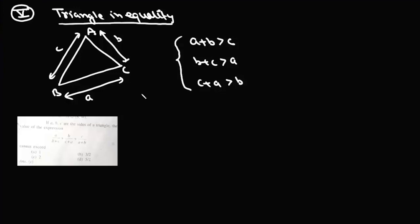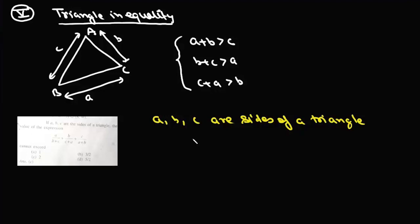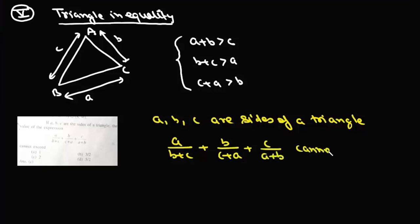Let us take one example: if a, b, c are sides of a triangle, then the value of the expression a/(b+c) + b/(c+a) + c/(a+b) cannot exceed what? If you closely look at this, it has the setting of a famous inequality called Nesbitt's inequality.